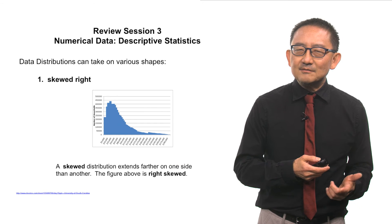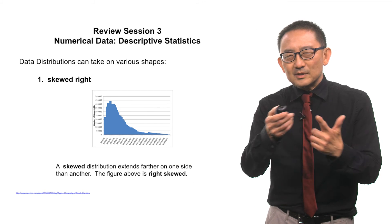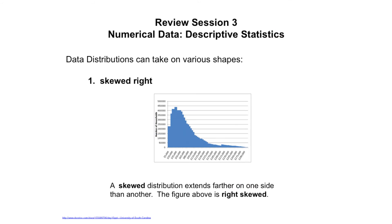Here's an example of a skewed distribution. Notice where that tail goes. The tail moves into the right direction. And therefore, we call this particular distribution skewed right.